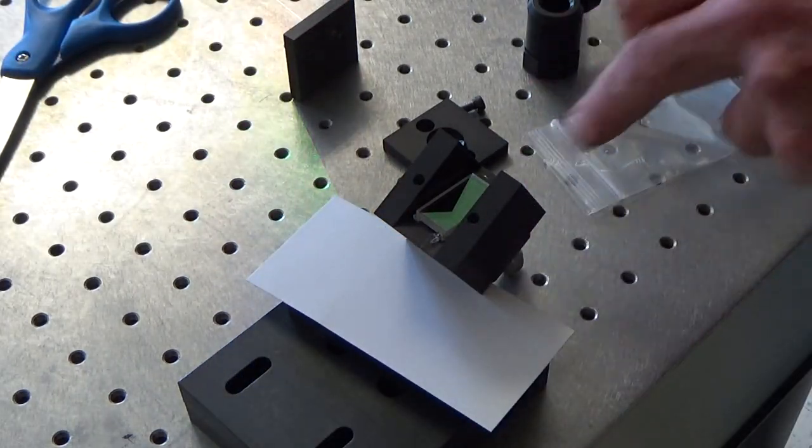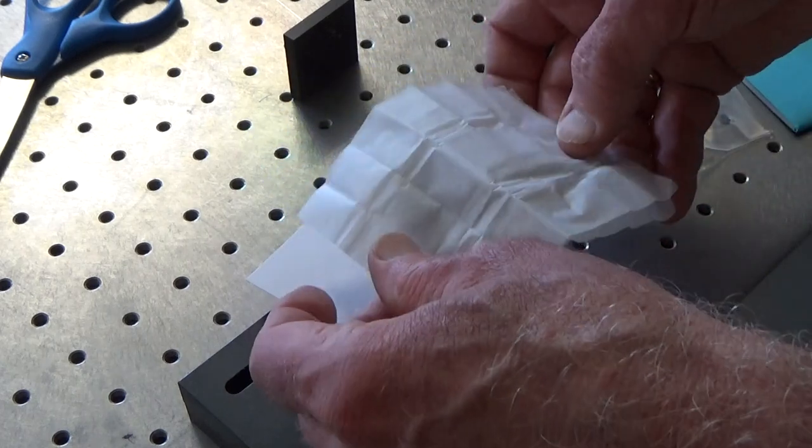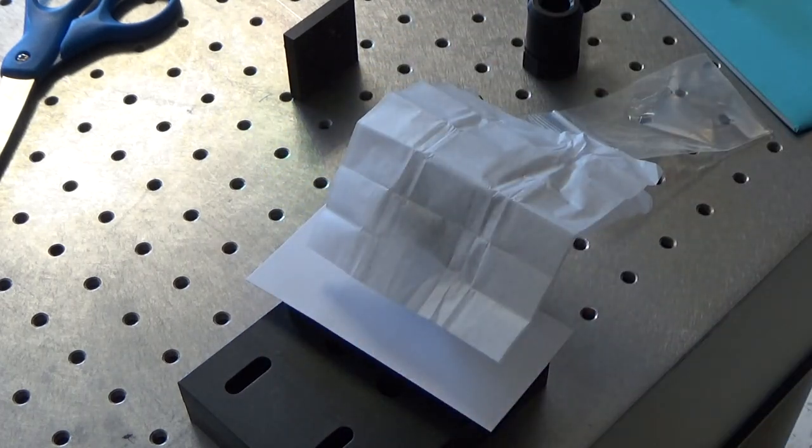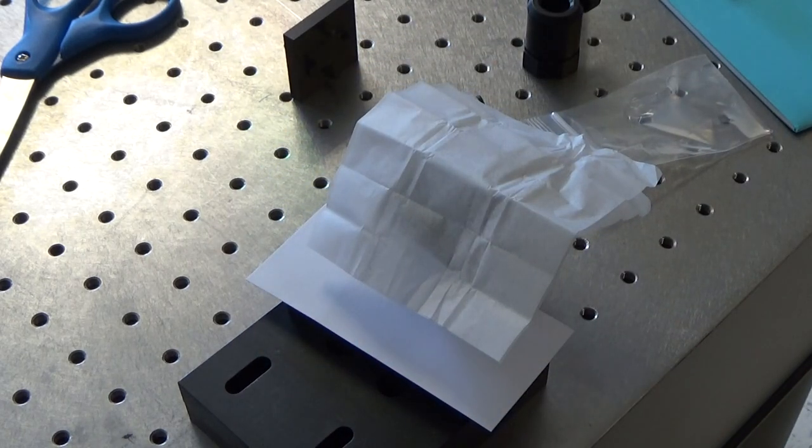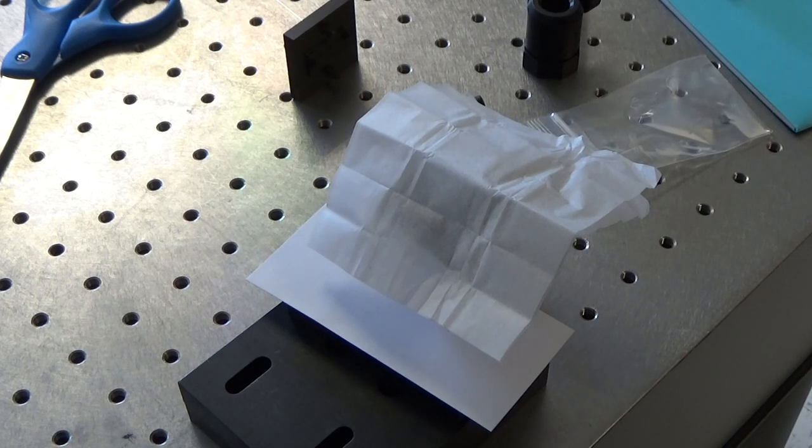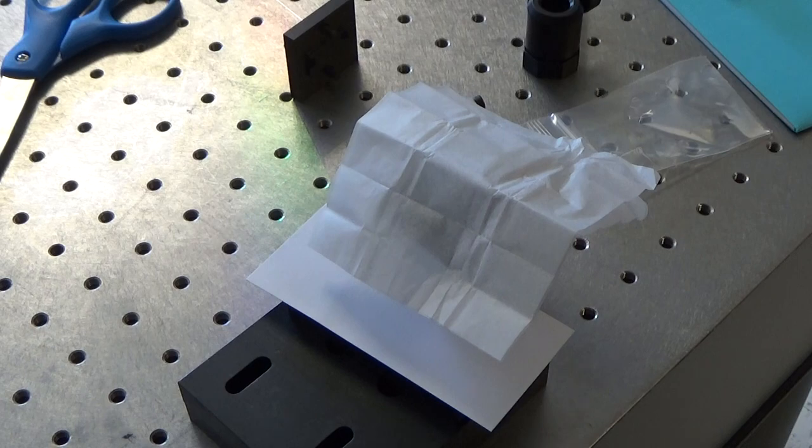That's it. All you need to do is let the silicon rubber glue dry about 24 hours and then you can replace the beam dump and the entrance plate. Thank you.